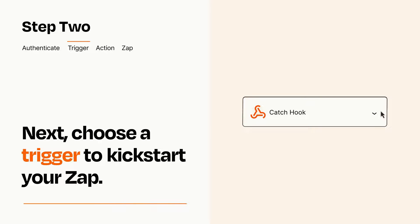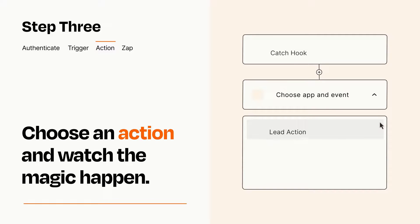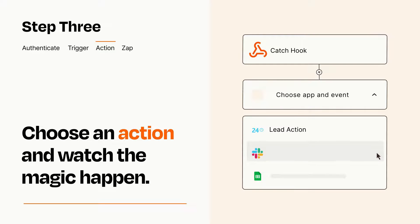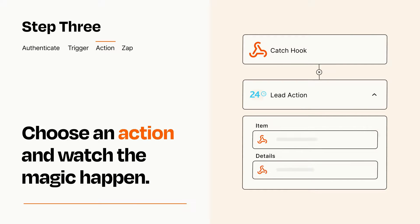This last part is where the magic happens. Choose the action you want to happen in your target app. You'll see a bunch of fields where you can specify the details of your Zap. You can type free form text or pull data in from your trigger step as needed.